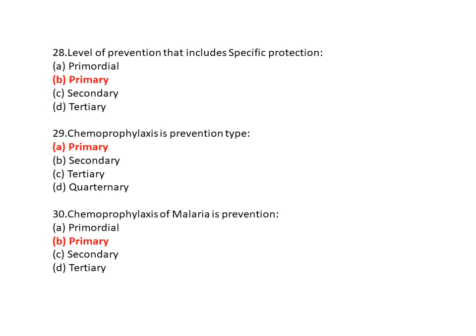Question 28: Level of prevention that includes specific protection is? Option A is primordial, option B is primary, option C is secondary, and option D is tertiary. So the correct answer is option B — primary prevention.